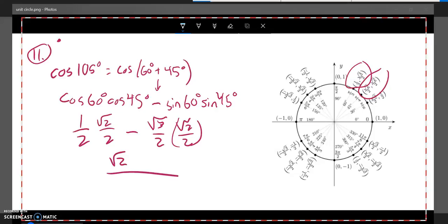So 1 times root 2 is root 2. The whole thing is going to be over 4. Minus root 3 times root 2 is root 6. Get that sign.